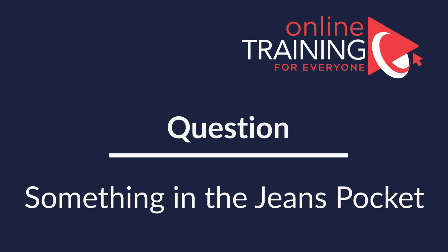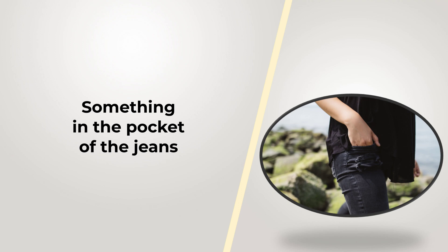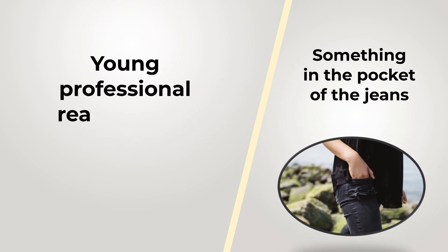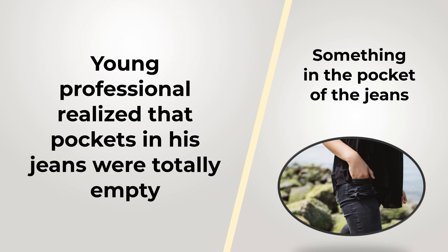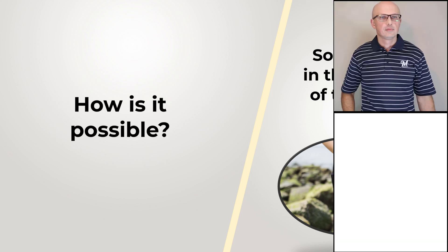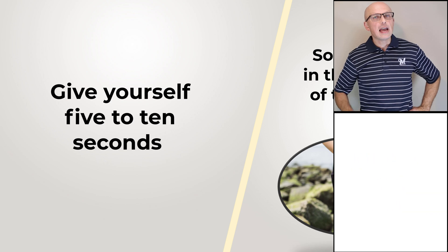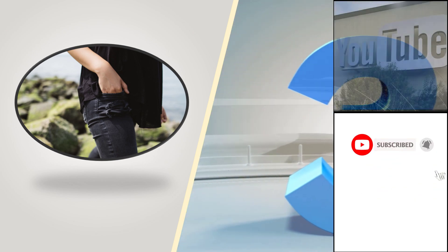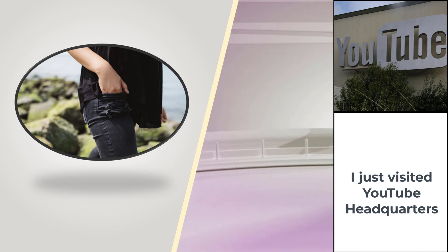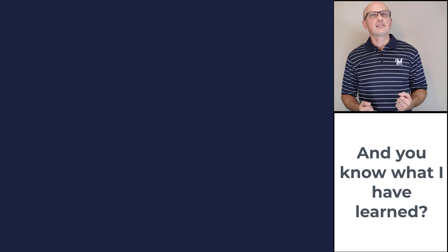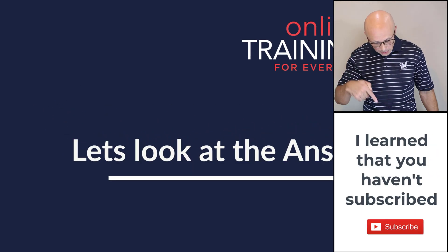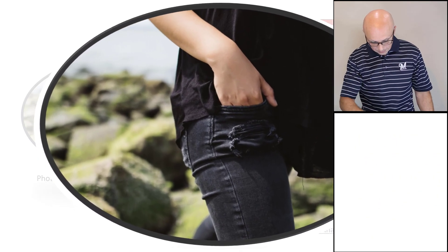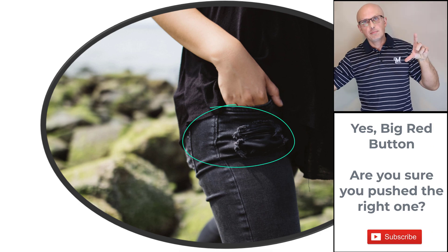Here's an interesting question that tests your verbal reasoning and sense of humor. A young professional realized that the pockets of his jeans were totally empty, but then realized there was something else in there. How is it possible? The solution is very simple — there was a hole in the pocket of the young professional's jeans. Hopefully you've nailed this question and now know how to answer similar problems on the test.